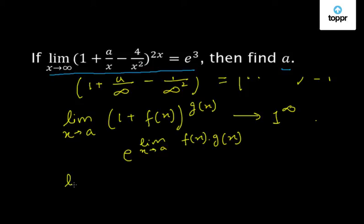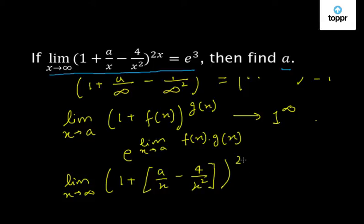So, lim(x→∞) [1 + (a/x - 4/x²)]^(2x), where (a/x - 4/x²) is f(x) and 2x is g(x).